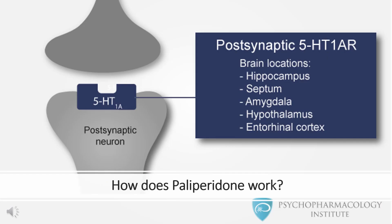How does palliperidone work? Palliperidone is the major active metabolite of risperidone. The mechanism of action of palliperidone, as with other drugs having efficacy in schizophrenia, is unknown. However, it has been proposed that the drug's therapeutic activity in schizophrenia is mediated through a combination of central dopamine type 2 (D2) and serotonin type 2 (5-HT2A) receptor antagonism.